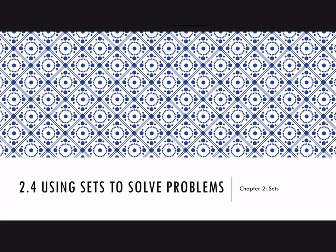Hello everyone. This video is a continuation of section 2.4 from Math in Our World. In the first half of this section, we talked about using Venn diagrams and sets to solve problems, and we looked at some examples with survey data. In this video, I wanted to do a couple of the harder examples from this section, and we still want to use sets and Venn diagrams to solve problems, but this time the given information is a little bit different than the ones we've done so far.